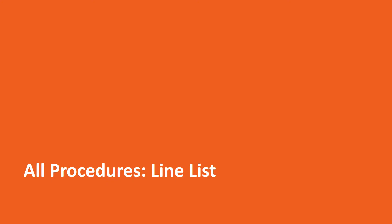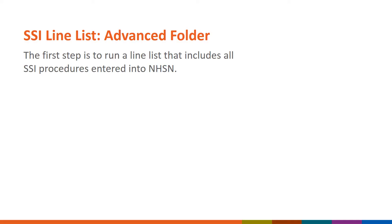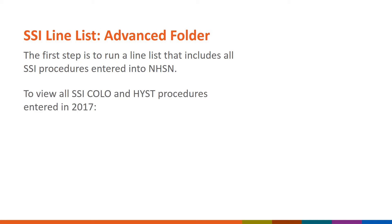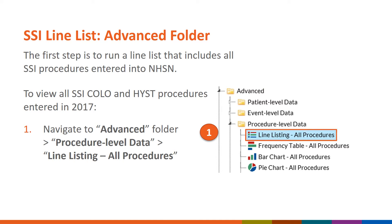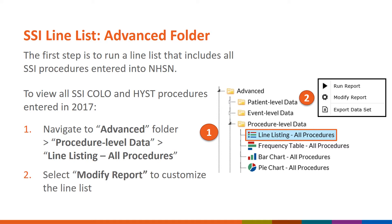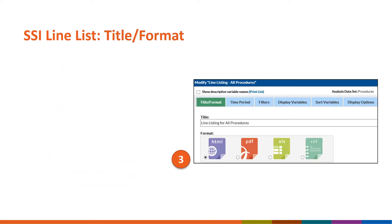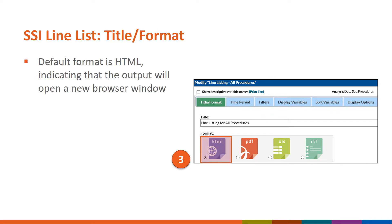In the next few slides, we will briefly go through how to create a line list to obtain a quarterly report containing all the colo and hist procedures entered into NHSN in 2017. The first step to troubleshoot your SSI-SIR is to create a line list to see all the SSI procedures entered into NHSN. Navigate to the Advanced folder at the bottom of the screen, open the Procedure Level Data folder, and right-click on the line listing All Procedures Report. Select Modify Report to customize the line list. In the Modification screen, the default format output is HTML.